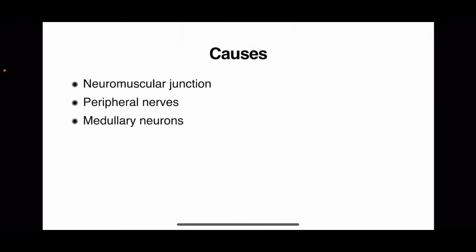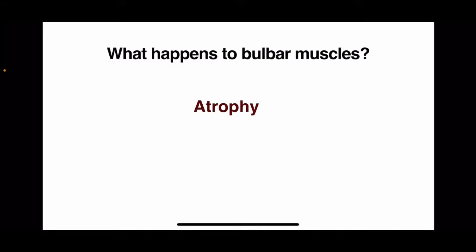What are the causes of bulbar palsy? The pathology may be in the neuromuscular junction, the peripheral nerves, or in the medullary neurons. Common causes include amyotrophic lateral sclerosis (ALS), Guillain-Barré syndrome, and medullary tumors or medullary infarcts, all of which can present with features of bulbar palsy. The bulbar muscles supplied by these medullary nerves will become atrophic.